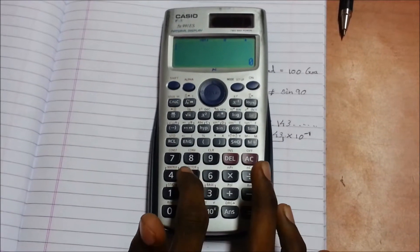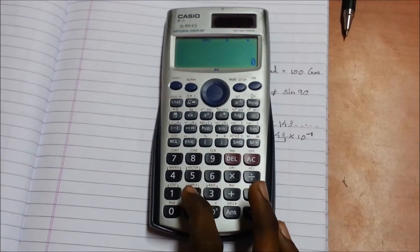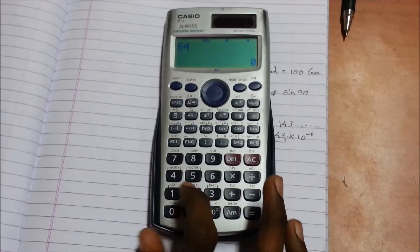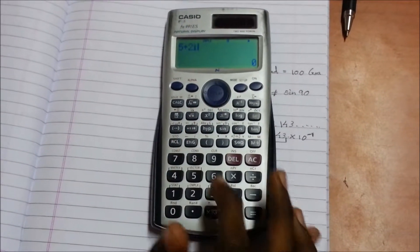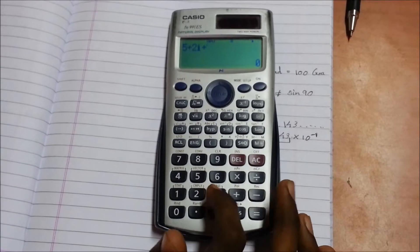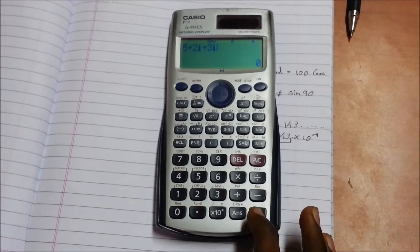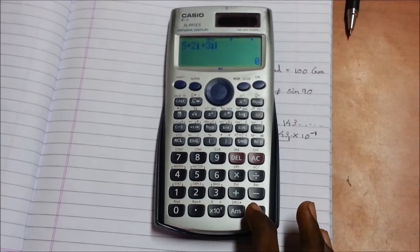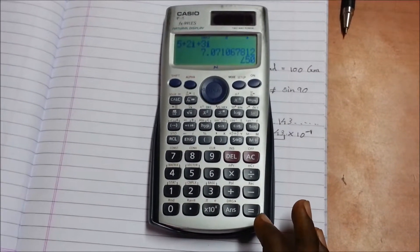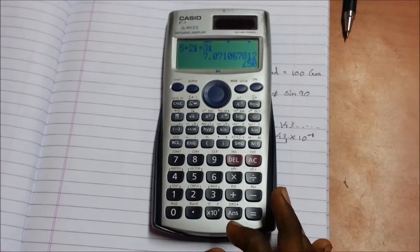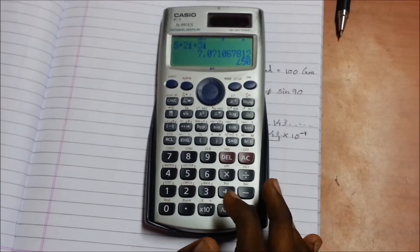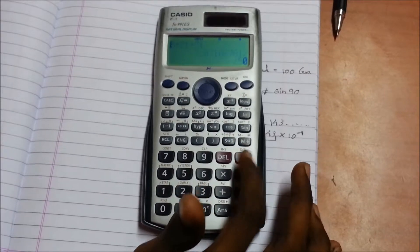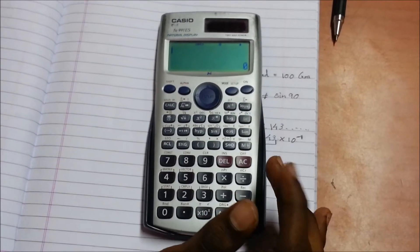Even if we add in the rectangular format, that is 2 plus 3i plus 3 plus i, you will get the answer in the polar format. Here you can see. Press AC button and go into the setup mode to learn more about it. Shift setup, down arrow.